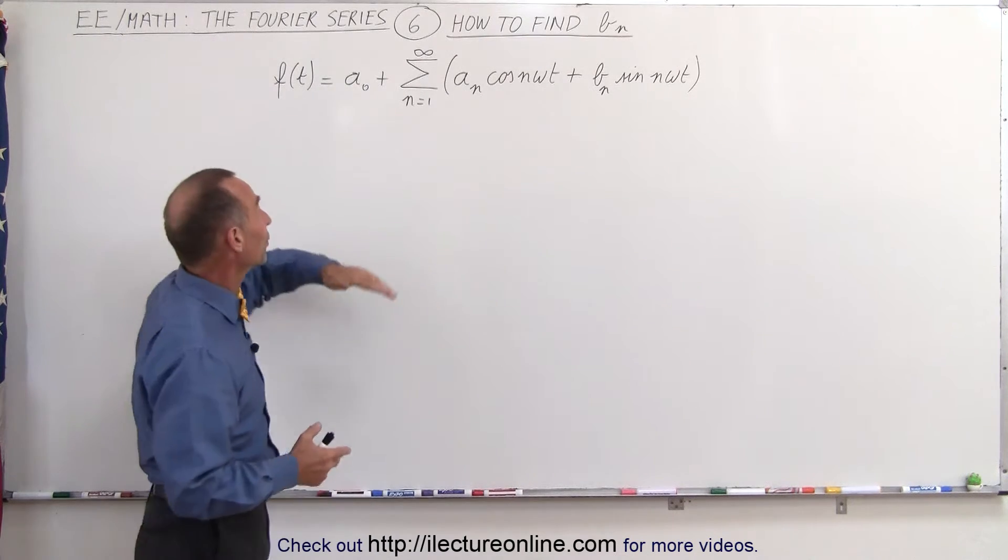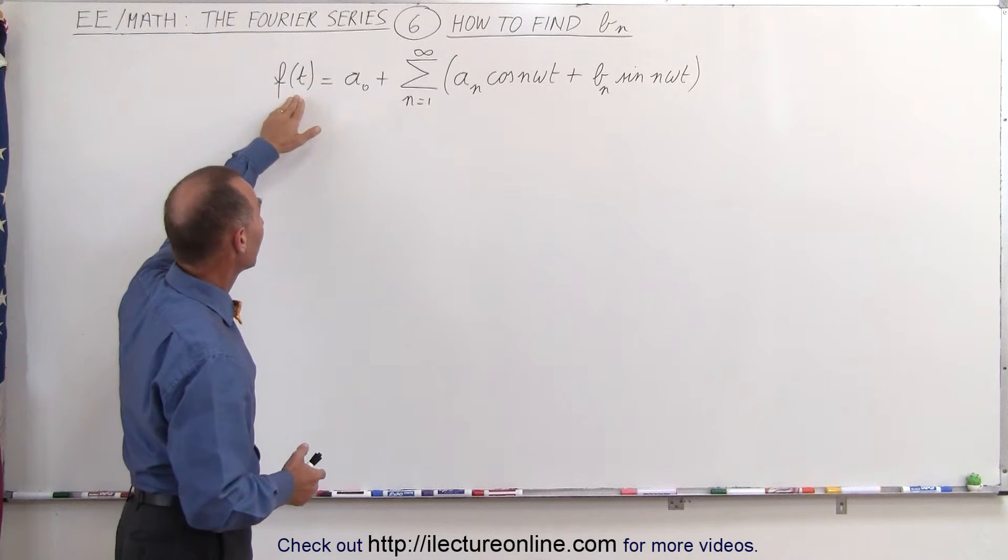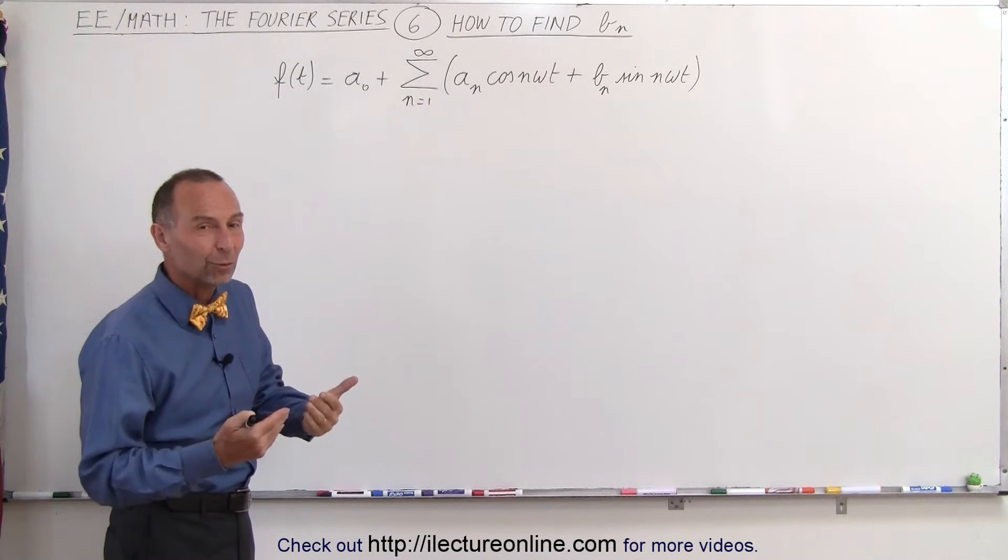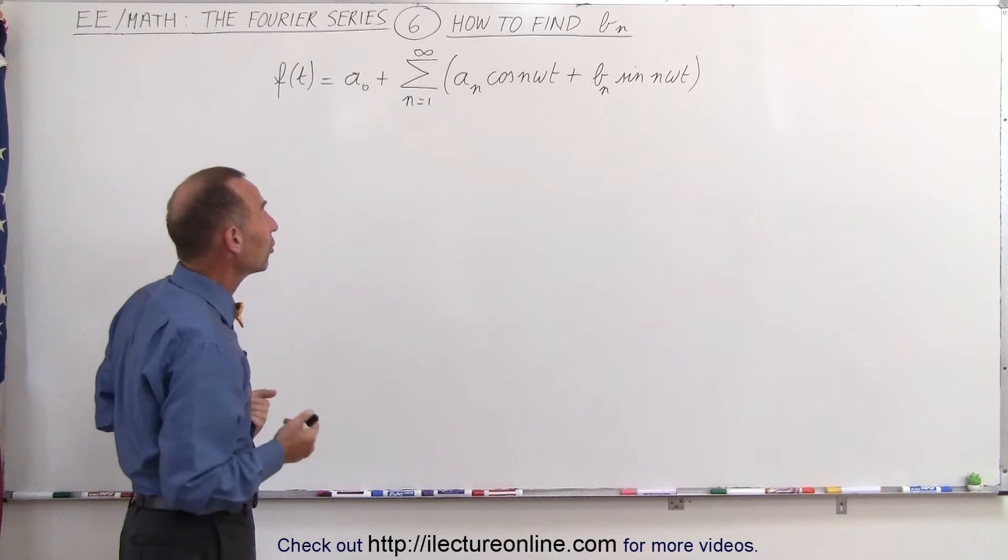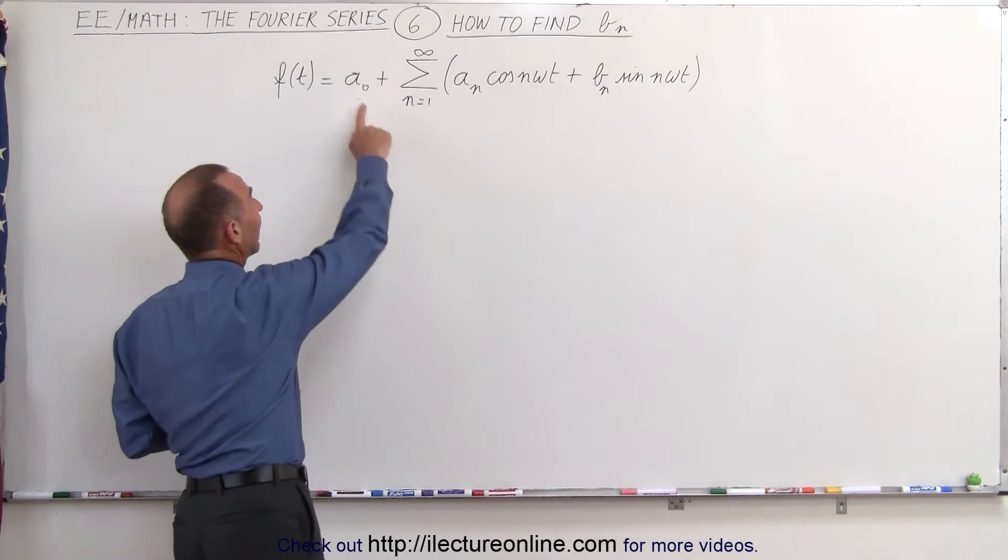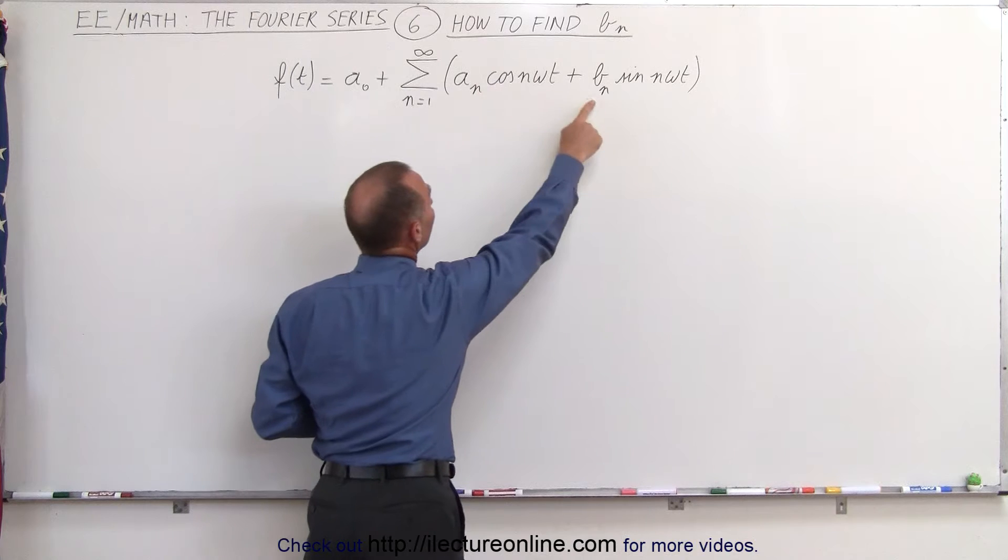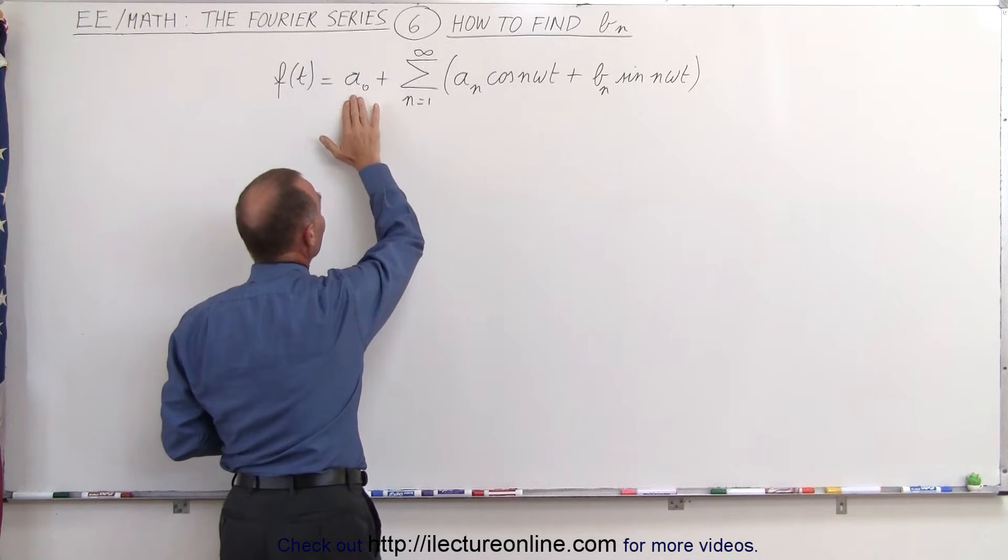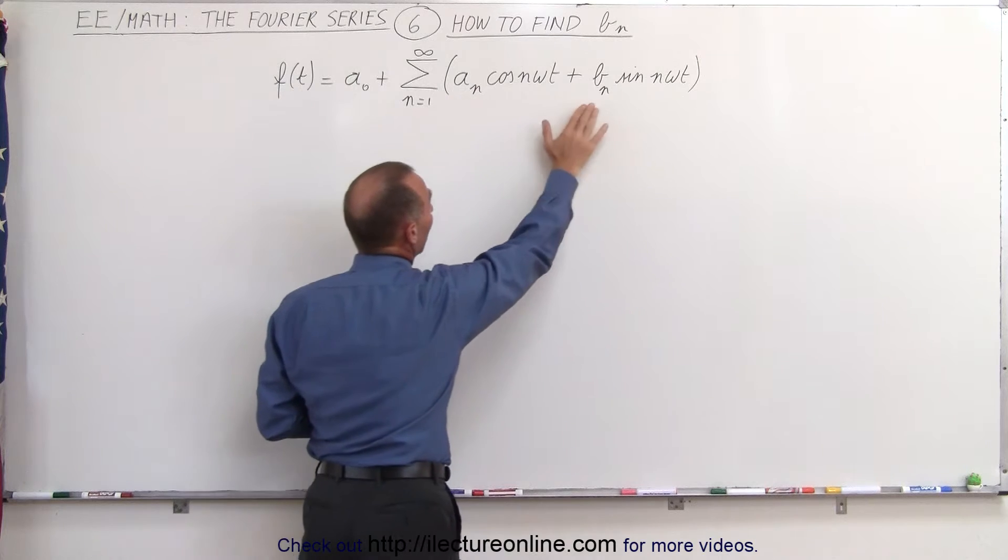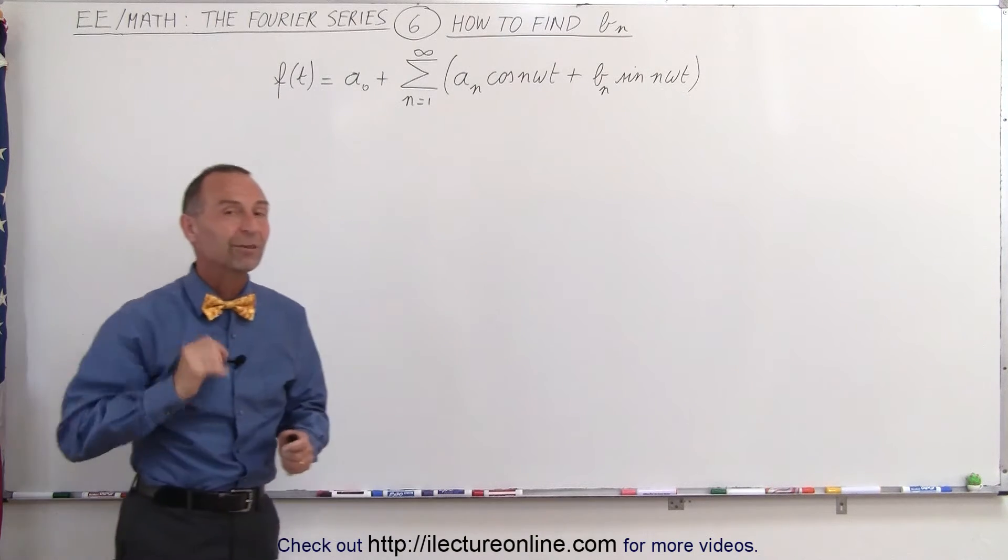Remember that when we're given a periodic function, we're supposed to find the Fourier series, which is writing the function in an infinite summation of sines and cosines, and for that we need to find the a sub 0, the a sub n, and the b sub n. In the previous videos we already found how to calculate the a sub 0 and the a sub n. Now we're going to see where the equation for the b sub n comes from.